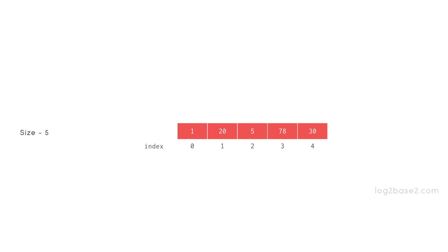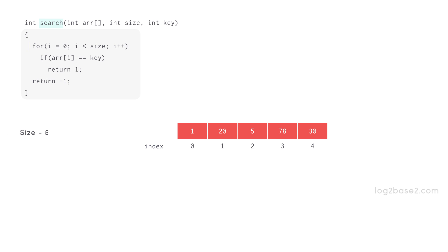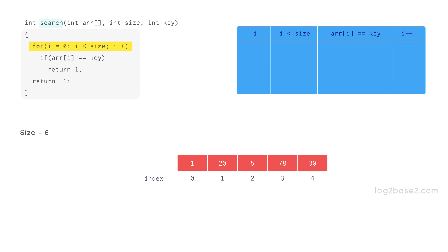Now let us see the code for implementing this program. We have the function search to do this job, and we are passing the array, the size of the array, and the key to be searched into the function. Here we have an array of size 5 so the variable size will hold value 5, and we are searching for element 5 so the variable key will also hold value 5. The for loop is used to traverse the array and each element will be compared with key. If a match is found, break the loop, otherwise continue for all the elements in the array.